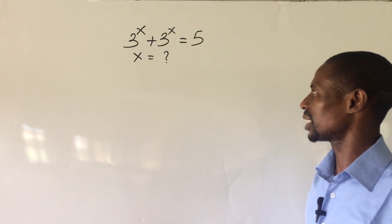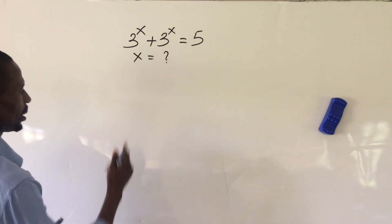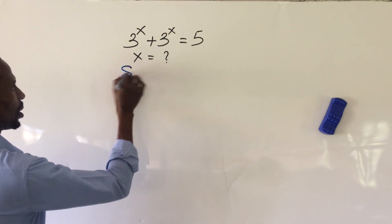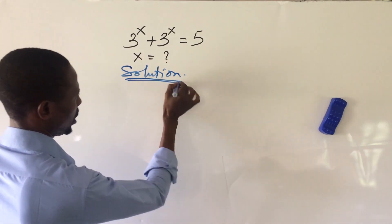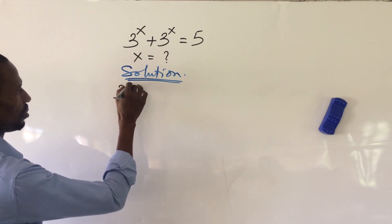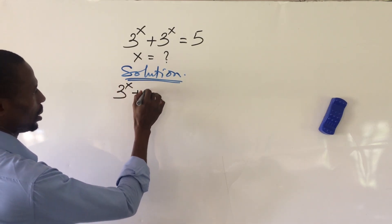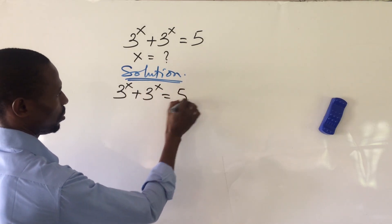How do we solve this challenge? It's a very simple one, but let's put down our solution and see the approach we can use to solve this. We'll take our solution, put down the question, which is 3 to the power of x plus 3 to the power of x again equal to 5.